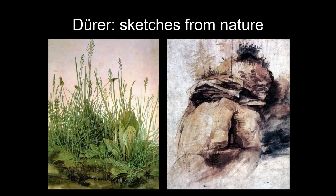There are two sketches — both watercolors. One is known as 'A Clod of Earth' or 'The Great Turf,' a very close look at essentially weeds — you can see dandelions. It's extremely detailed, extremely close observation. Then there's a drawing of a cliff from his travels, painted with washes and seeming very free. The first time I saw the reproduction, I thought how modern it felt. Generally, when we think of Dürer's style, it's very linear and very precise — it's only in the sketches that you get this kind of freedom.